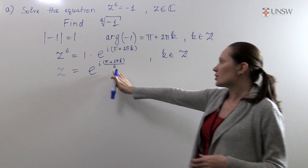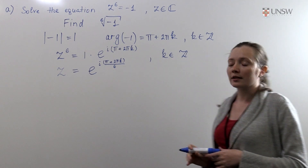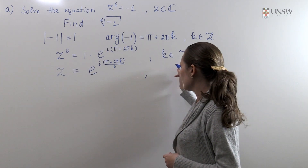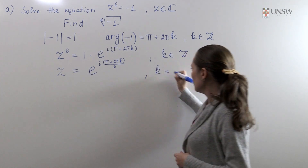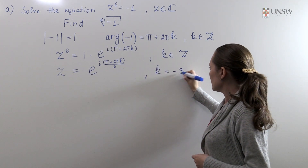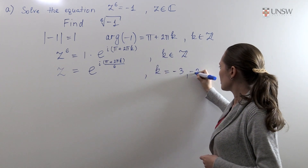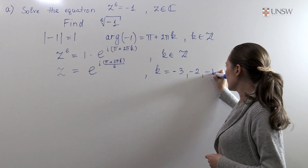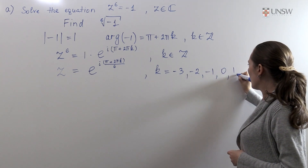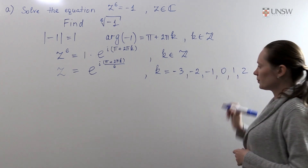To make this number have argument between minus π and π we will take k equals minus 3, minus 2, minus 1, 0, 1, and 2.